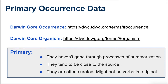We need to understand what we mean by primary occurrence data. It means the data hasn't gone through some kind of summarization process — we're not looking at a checklist of species in a national park or anything like that. They tend to be close to the source that generated them, though not necessarily completely raw or handwritten in field notebooks, since they're often curated in museums or large datasets and may have been digitized.